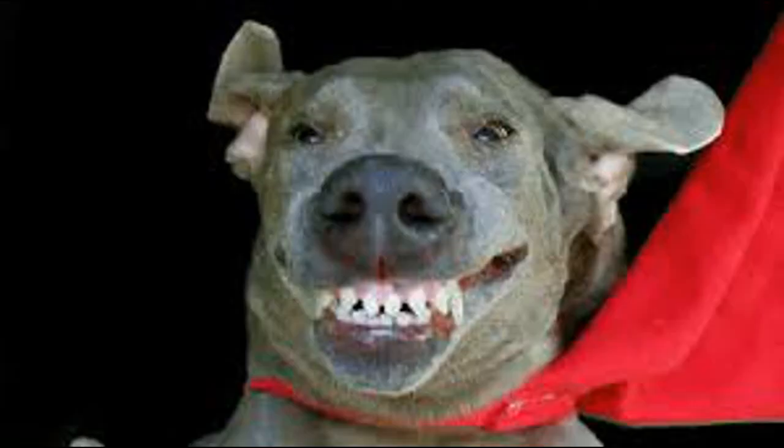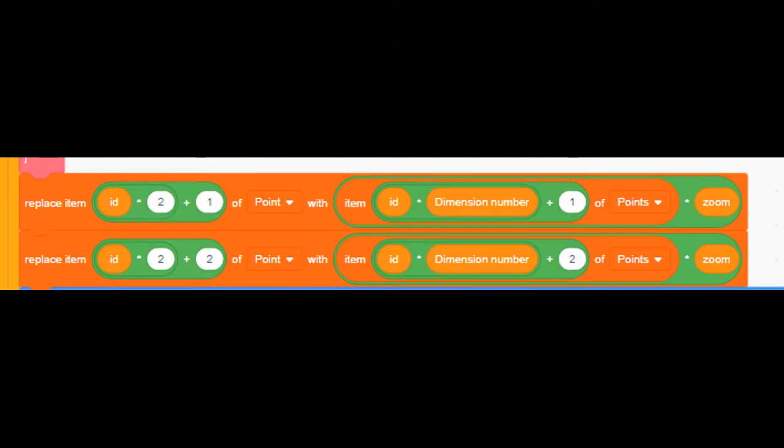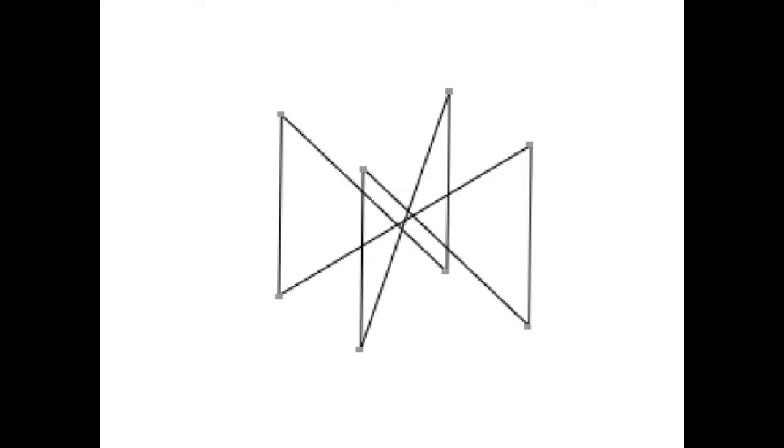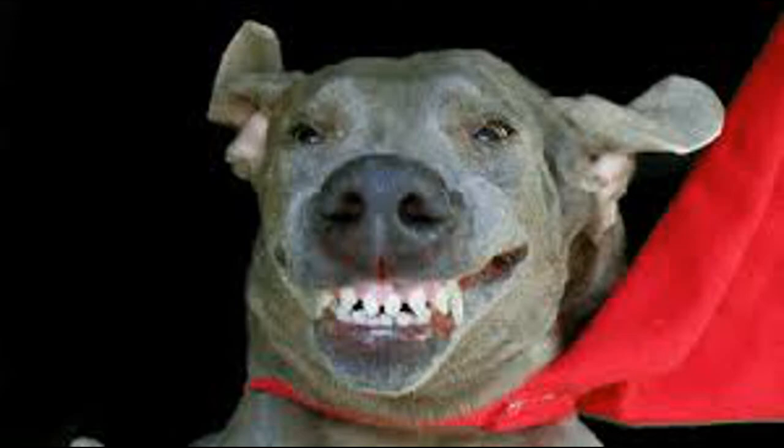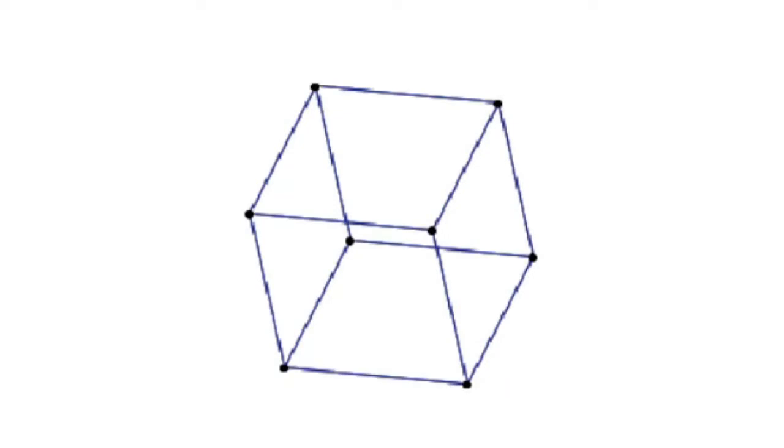I then made all the clones report their X and Y coordinates into another list, where the main sprite would then draw a line to all of the coordinates. I then realized that this was a fatal mistake, since the points were not connected properly. So I made the main sprite go to each vertex in each top face and draw a line to the bottom, then go to each vertex in one side of each cube and draw a line to the other side.